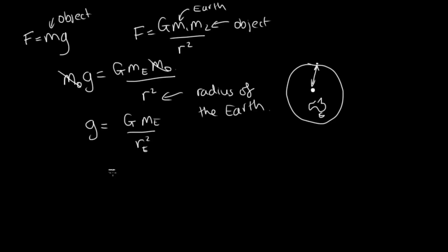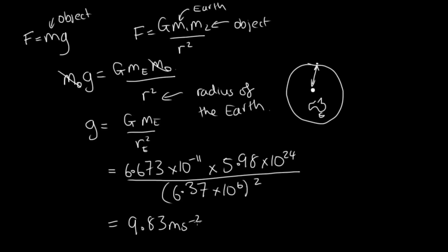So let's just check that it works for the Earth. This is equal to 6.673 times 10 to the minus 11 is our universal gravitational constant times the mass of the Earth, which is 5.98 times 10 to the 24 kilograms over the radius of the Earth, which is on average 6.37 times 10 to the 6 meters. And then we need to square that. So solving this on the calculator, we get 9.83 meters per second per second.